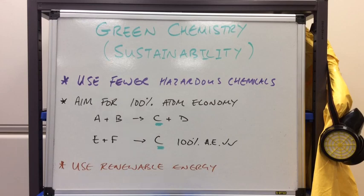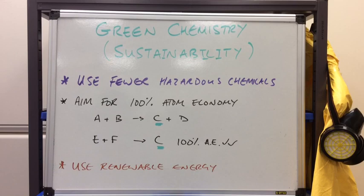Another way scientists can make their processes more sustainable is to try and use renewable energy. Instead of burning fossil fuels to create the heat or pressure required for a reaction, they would use renewable energy sources. You're not burning fossil fuels, so there's less CO2 going into the atmosphere, and you're not using up a finite resource — fossil fuels will ultimately run out, so you are making them last longer and sustaining them.